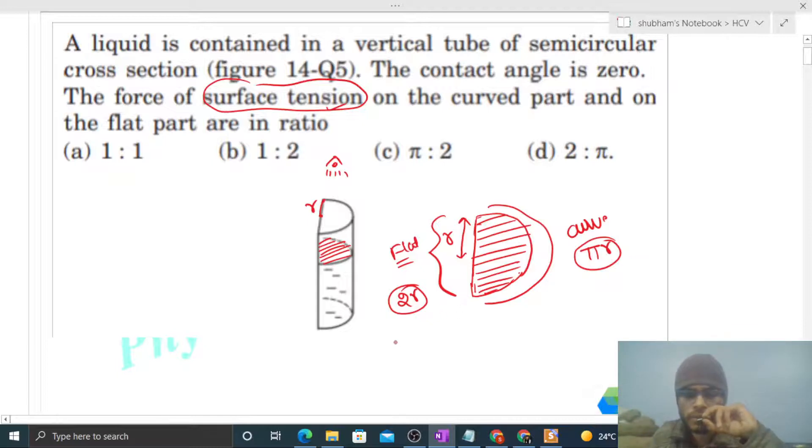Then what will be the force on the flat part? Let's say F1. That will be 2r length into surface tension, that is S. Let's say S is the value of surface tension between this liquid and this tube. So when you multiply length with surface tension, what you will get is force. Surface tension is nothing but force per unit length, newton per meter is its unit.